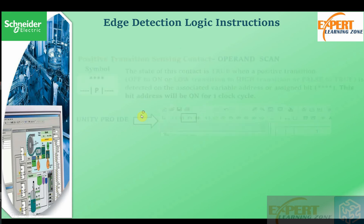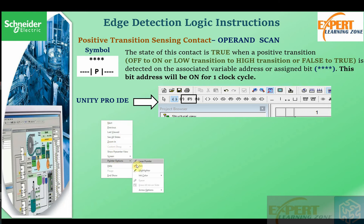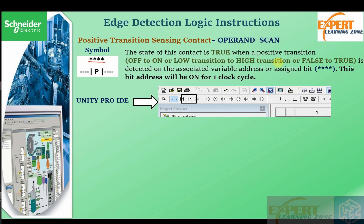To begin, we start with the positive transition sensing contact. This is the symbol — it looks like a normally open contact with a P inside, and this is the associated address. The state of this contact is true when a positive transition, that is off to on, low to high, or false to true, is detected on the associated variable address or assigned bit.